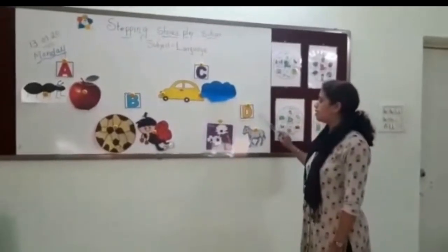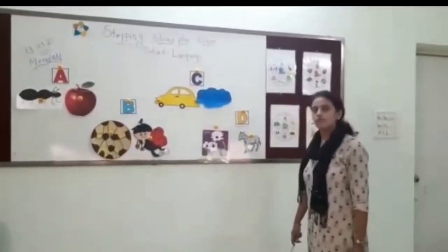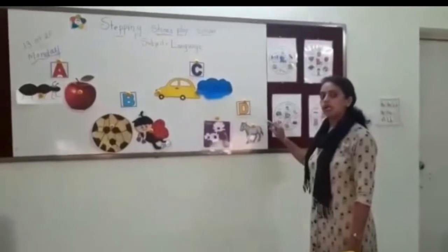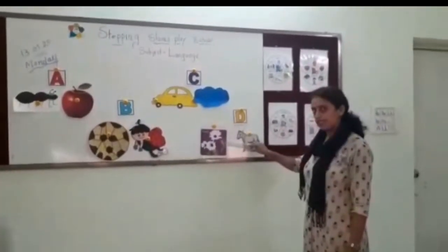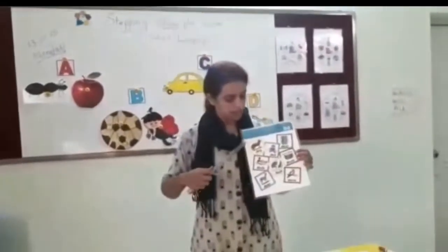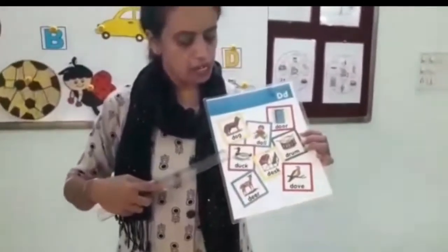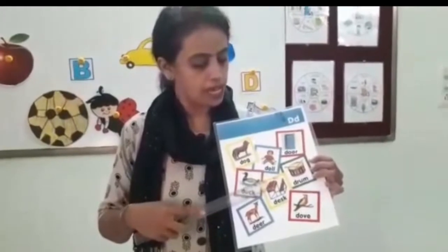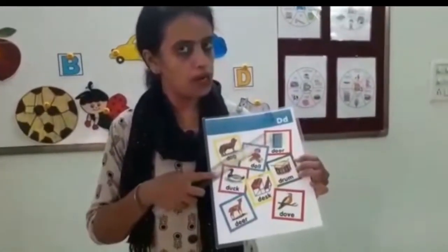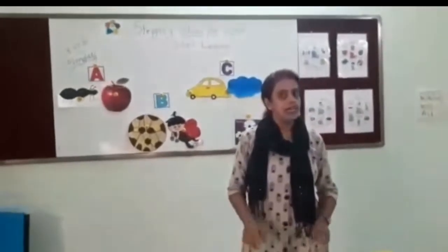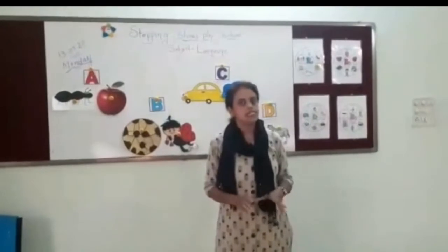Now we will see letter D. What is the sound of letter D, children? It is D. D for Daisy, D for Donkey, D for Dog, D for Duck, D for Deer, D for Doll, D for Desk, D for Door, D for Drum. I hope you all are clear with these letters A, B, C and D.